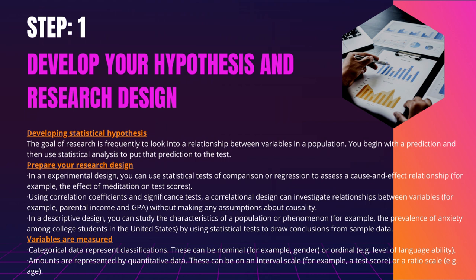Amounts are represented by quantitative data. These can be on an interval scale, for example, a test score, or a ratio scale, e.g., age. Many variables can be measured with varying degrees of precision. Age data, for example, can be quantitative — 8 years old — or categorical — young. If a variable is coded numerically, for example, level of agreement from 1 to 5, this does not imply that it is quantitative rather than categorical.